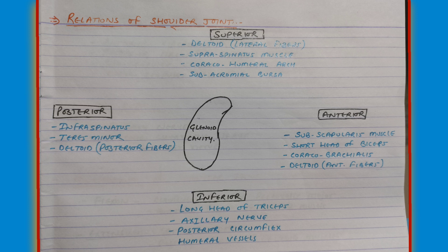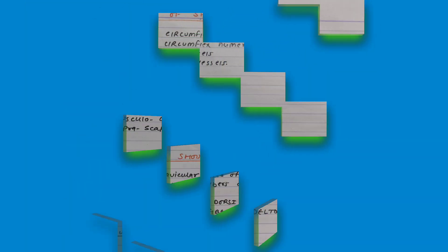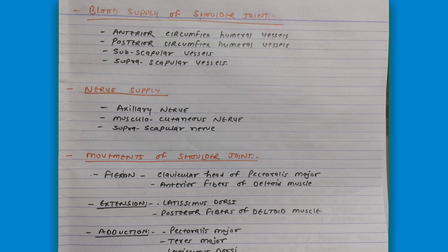The next heading is the blood supply of the shoulder joint. We have to write down only the names of the vessels. These are: the anterior circumflex humeral vessels, which include both artery and veins; the posterior circumflex humeral vessels; the subscapular vessels; and the suprascapular vessels.